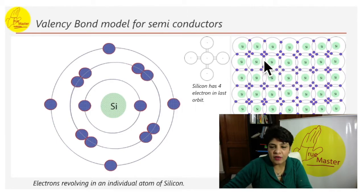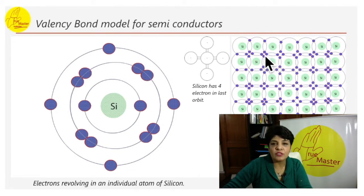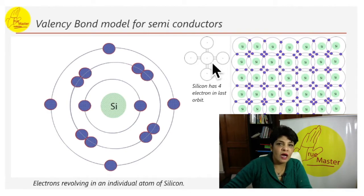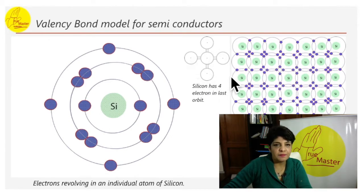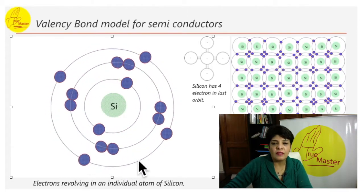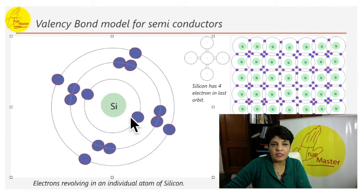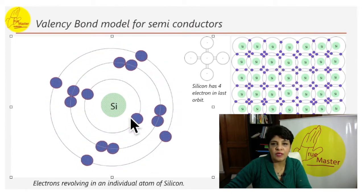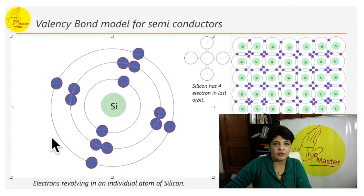If you look at silicon, it has four electrons of its own but it also shares electrons with neighboring atoms. The outermost shell has four electrons. This animation is showing you how the electrons are moving around the silicon atom — one silicon atom with the outermost shell having four electrons.